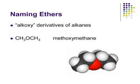Here is another ether. We name them as alkoxy derivatives of alkanes. So we have R and R prime. We take this section and call it that number of carbons plus the ending 'oxy,' and then the rest of it is named as an alkane. So we've got one carbon on the left — one carbon has the prefix 'meth' — so it becomes 'methoxy.' And then I have one carbon on the other side, so it's methoxyethane. Here's a space-filling picture of methoxymethane.